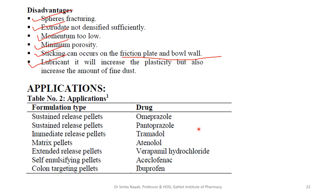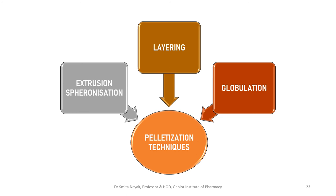Several other drugs have found good applications in pellet form and are finally marketed as tablets or capsules. We have looked at the most important technique — extrusion spheronization — including its principle and equipment. Now we will move further to the next two techniques: layering and globulation. These are the three important techniques for pelletization: extrusion spheronization, layering, and globulation.